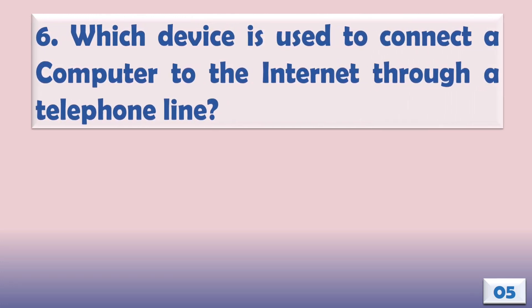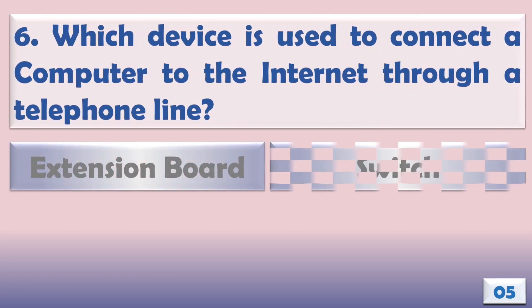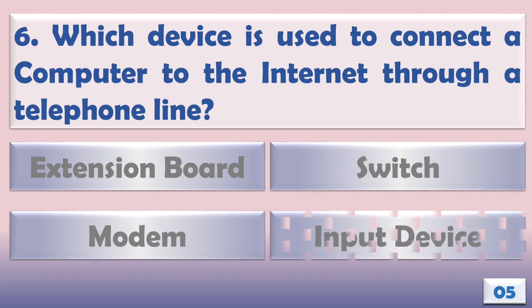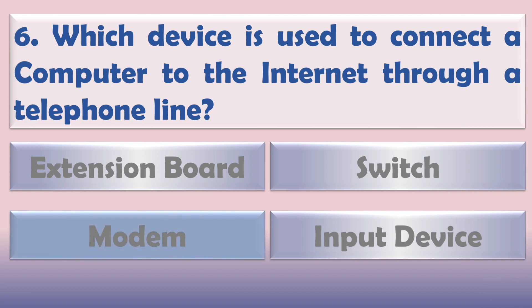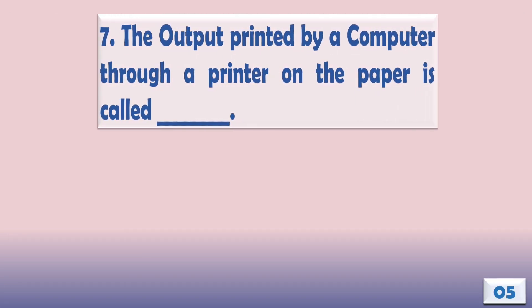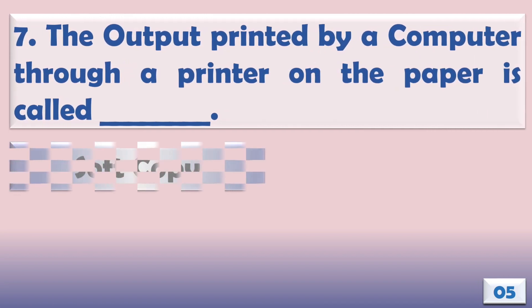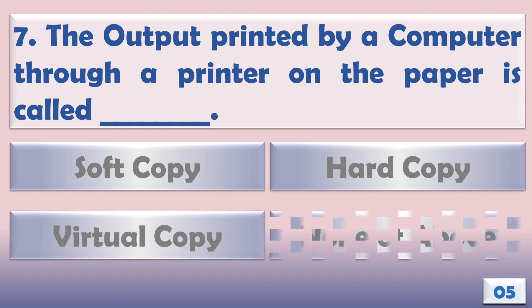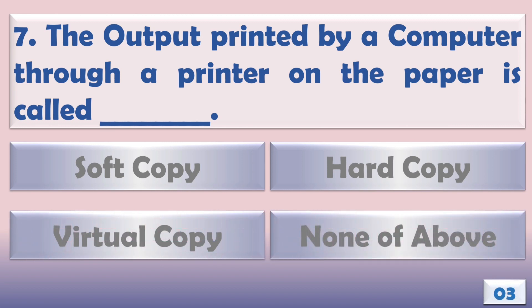Which device is used to connect a computer to the internet through a telephone line? The output printed by a computer through a printer on the paper is called a hard copy.